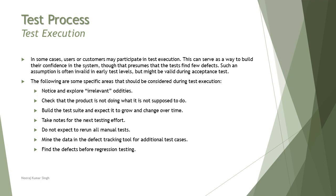Find defects before regression testing. Regression testing is mainly about maintenance — making sure things still work fine when something new is added or an update is made to the system. The key area of regression is ensuring everything else still works, so do not expect to be finding new defects during regression, as that invites a lot of rework. Try to find as many defects as possible before regression, because defects found during regression can cause delays in deliveries.